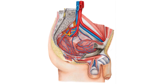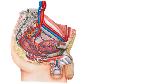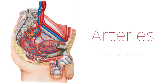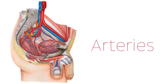Now the arteries and veins of the male pelvis are similar to those that you find on the female pelvis, with the exception of the blood vessels of the genitalia, which differ, of course. Now let's begin by looking at the blood vessels that supply oxygenated blood to the pelvis — so the arteries.